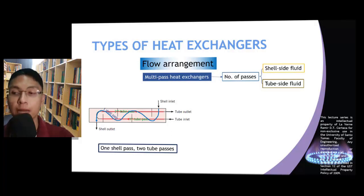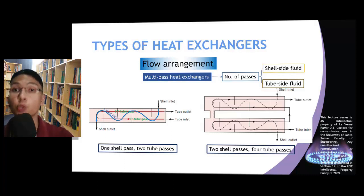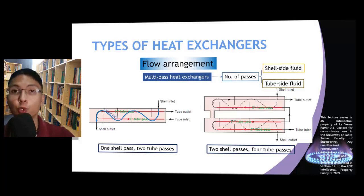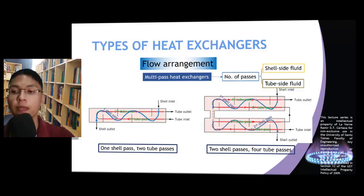Another example is the two-shell-passes, four-tube-passes heat exchanger. From the diagram, the tube-side fluid flows in four different directions: the first tube pass, the second, the third, and the fourth. For the shell-side fluid, it flows first in one direction, then exits in the opposite direction — since it flows in two opposite directions inside the heat exchanger, this gives two shell passes.